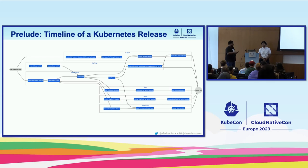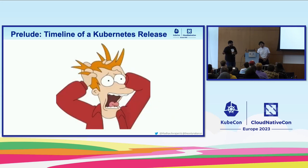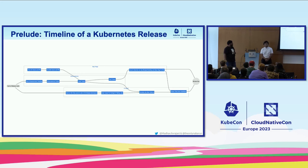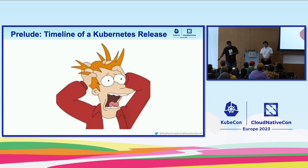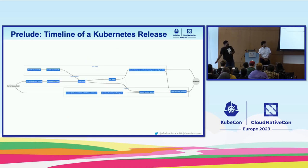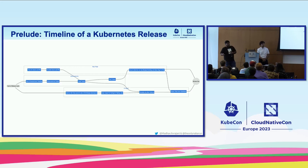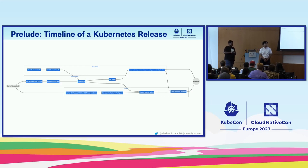Now, about the process — it is scary. In this talk, what we are mostly concerned about is three teams: enhancements, bug triage, and CI signal to understand how the release process works. The other teams are essential to the release, but for our talk these three are the most relevant.